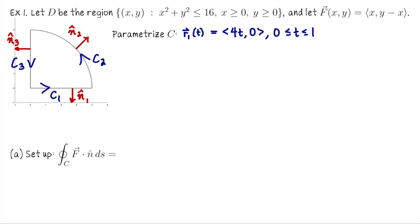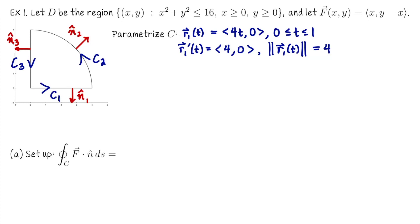For C1: parametrize as R1(t) = (4t, 0), t ∈ [0, 1], since the y-coordinate is always 0. The velocity vector is R1′ = (4, 0), so the speed is a constant 4. The outward pointing unit normal is always (0, -1), pointing one unit down.